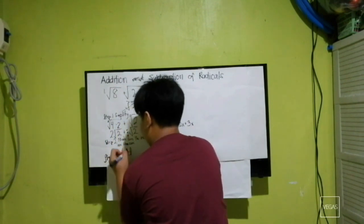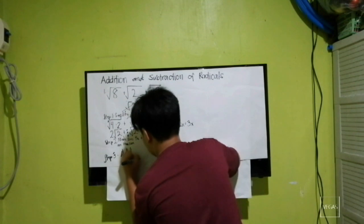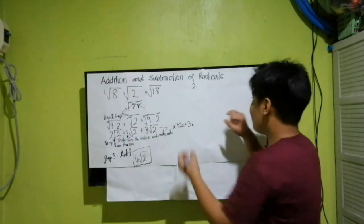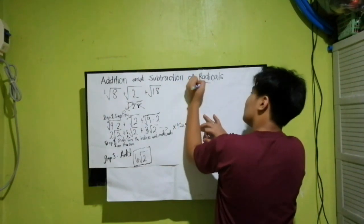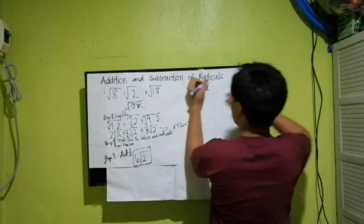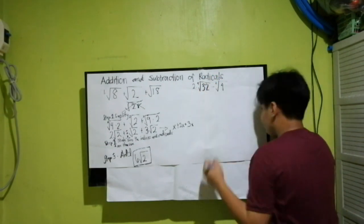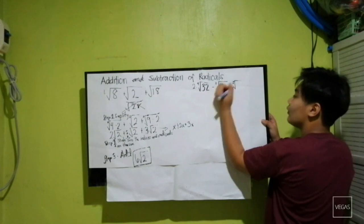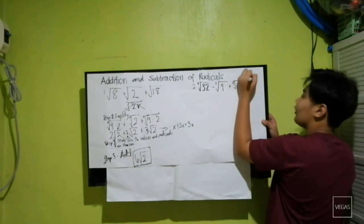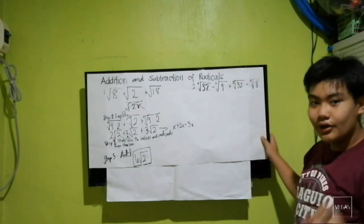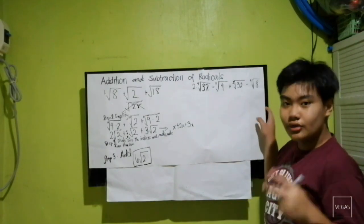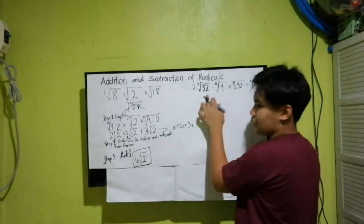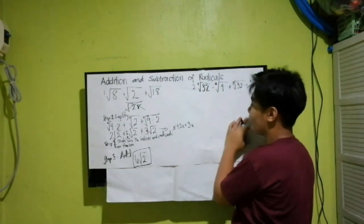That gives us 6 square root of 2 as your final answer. The next problem is: fourth root of 32 minus square root of 4, plus fifth root of 32 minus fourth root of 8. As you can see, there are no identical terms — there are two radicals with 32, but they have different indices of 4 and 5 — so we cannot add anything yet and need to simplify.